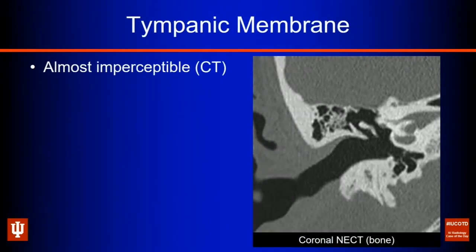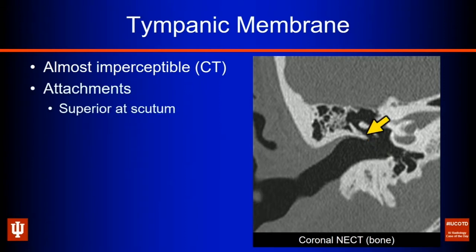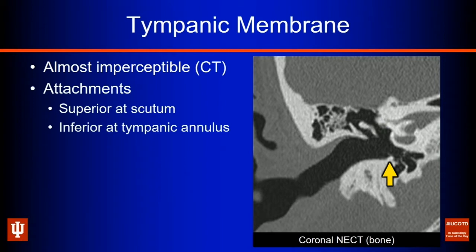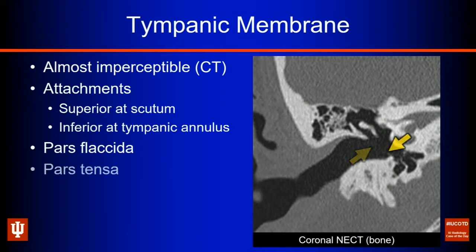A few words about the tympanic membrane itself. In its normal state, it should be almost imperceptible on CT, denoted here by the yellow line. It attaches superiorly at the scutum and inferiorly at the tympanic annulus. We can divide the TM into two segments: the pars flaccida more superiorly and the pars tensa more inferiorly.